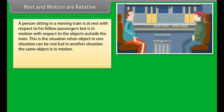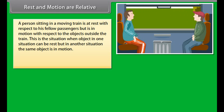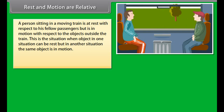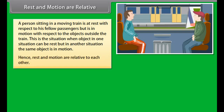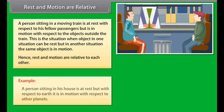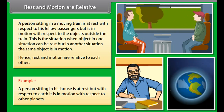Rest and motion are relative. A person sitting in a moving train is at rest with respect to fellow passengers but is in motion with respect to objects outside the train. In one situation an object can be at rest, but in another situation the same object is in motion. Hence rest and motion are relative to each other. For example, a person sitting in a house is at rest, but with respect to the earth it is in motion, and with respect to other planets as well.